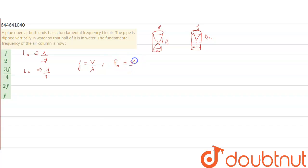So after putting the value of lambda for the open pipe, F_O will be equal to V upon 2L. So this is the fundamental frequency for the open pipe.